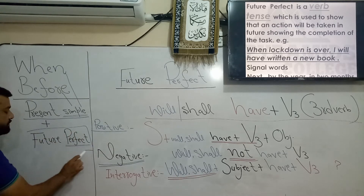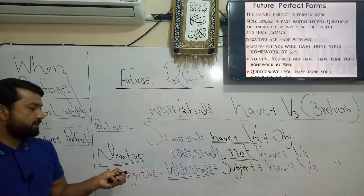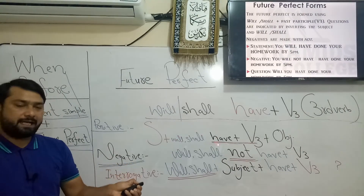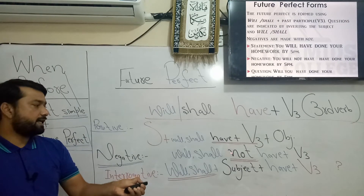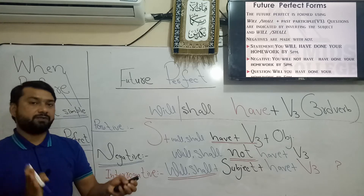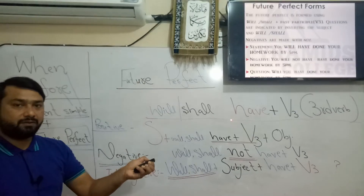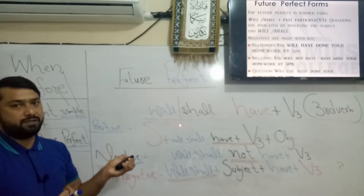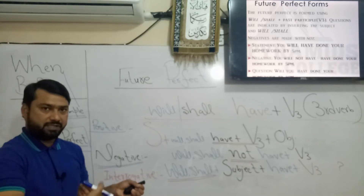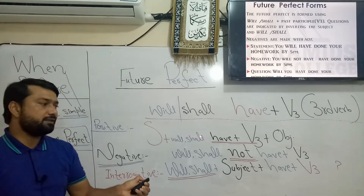For positive sentences, the structure is: Subject + will/shall + have + V3 + object. You may use only 'will have.' For negative sentences, simply add 'not' after will or shall. You are not going to use 'has' even if your subject is he, she, it, or a singular name, because in the future tense we only use 'have' — no 'has,' no 'had.' After will, shall, or would, there must be V1, and 'have' is V1.